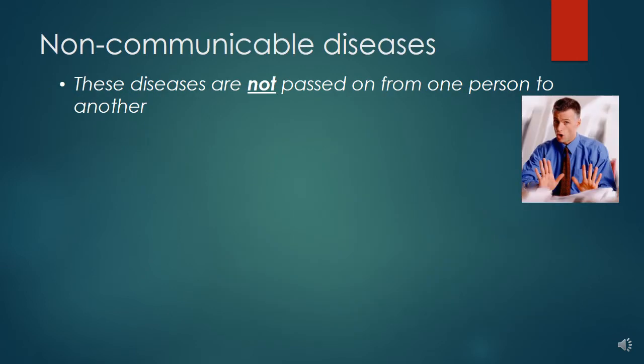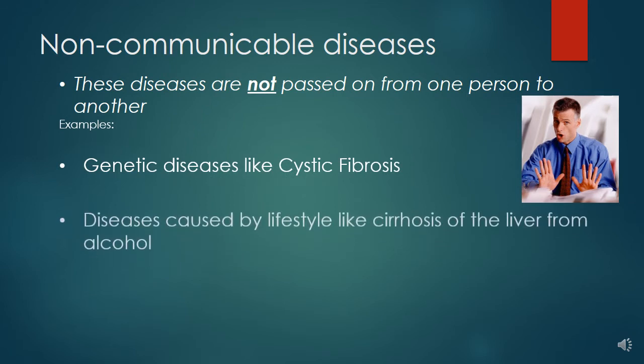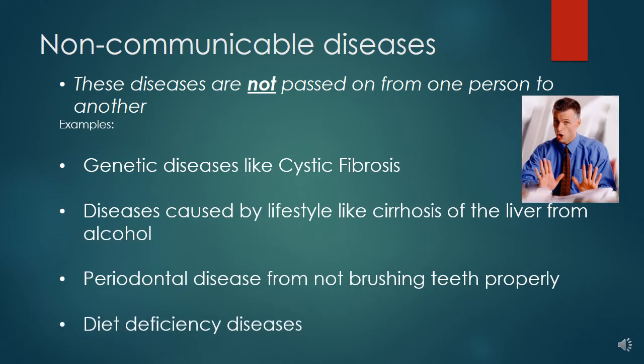Other diseases are non-communicable — they are not passed on from one person to another. For example, genetic diseases that you are born with, like cystic fibrosis, are non-communicable; you can't pass them from one person to another. Diseases caused by lifestyle, such as cirrhosis of the liver from drinking too much alcohol, are also non-communicable. Periodontal disease, which is bleeding from the gums caused by not brushing your teeth properly, and diet deficiency diseases, where you don't eat enough of certain nutrients, are also non-communicable diseases.